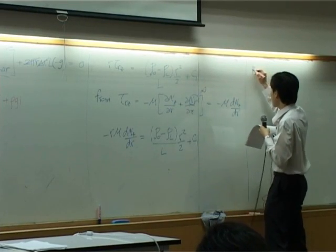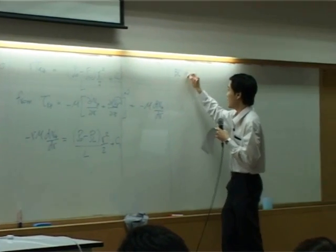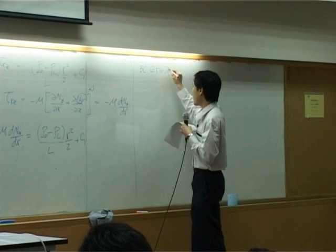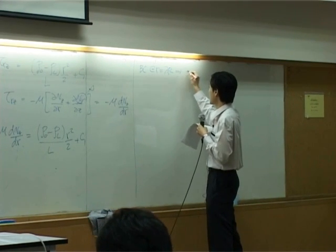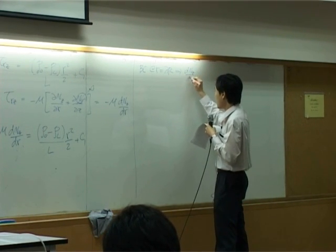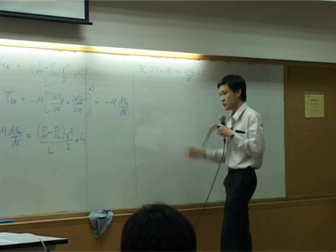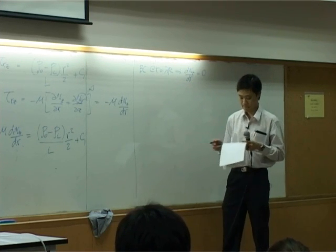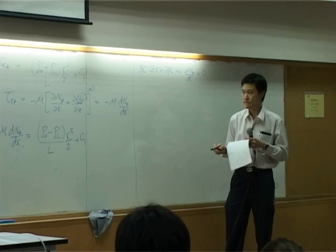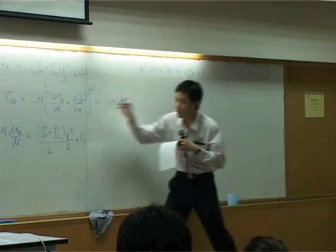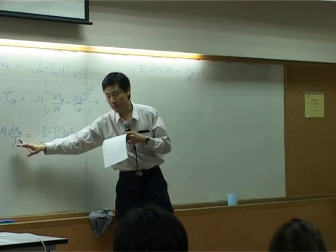So our boundary would be at r equal to lambda r. dvz by dr would equal to 0. If you plug in there, left hand side will become 0.